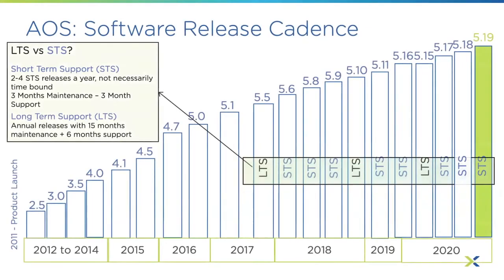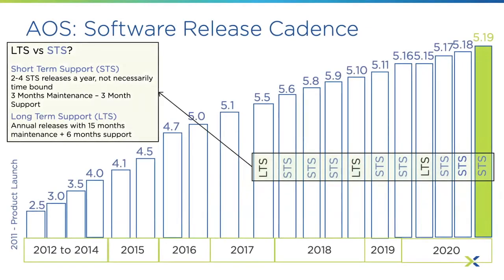First, let's look at the roadmap for our software release cadence — LTS versus STS. LTS is the long-term support release, which is more stable and includes some bug fixes as well as new features. STS is the short-term support release. Currently, AOS 5.19 is part of our STS family.